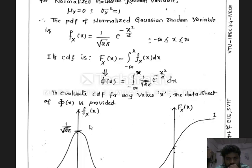The plots of the PDF and CDF of the Gaussian random variable are shown here. The Gaussian PDF is symmetric with respect to the y-axis, forming a bell-shaped curve with the highest intensity of 1 divided by the square root of 2π at x equal to 0. The CDF starts at 0 at minus infinity and increases continuously towards 1 at plus infinity.